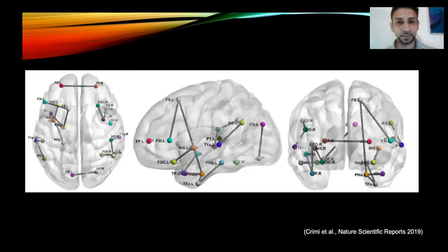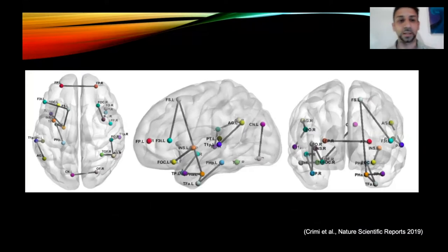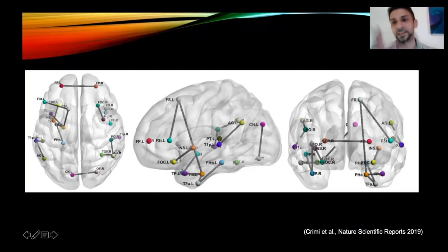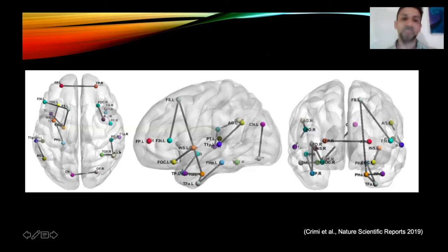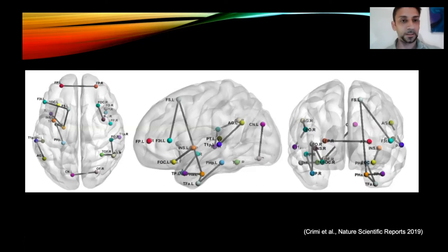Here's an example from work I did comparing Alzheimer's patients and age-matched elderly controls. These were the differences we found — meaning the Alzheimer's group had less of these connections at the population level. This can further help with the study of Alzheimer's and other diseases.